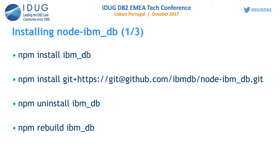If you want to use the latest code from GitHub rather than from the npm package store, use the second command, which includes the GitHub link. It directly downloads the latest source code from GitHub and installs it on your system. To uninstall it, just issue npm uninstall ibm_db.